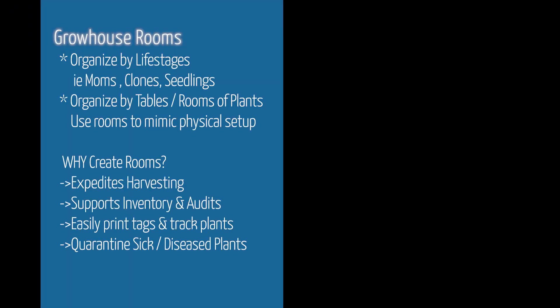In regards to grow house rooms, some of my recommendations are organizing by life stage — i.e., making a room just for moms, just for clones, just for seedlings — to help easily keep track of these. I also recommend organizing by tables or rooms of plants depending on how your grow house is set up, because that makes harvesting easy. You can harvest one row or one table at a time and easily replicate that in Biotrack.